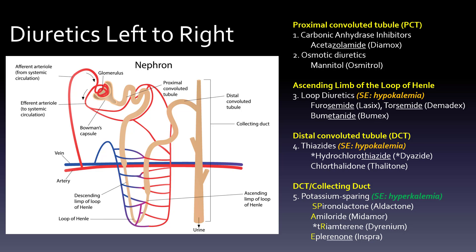I like to use SPARE as a mnemonic for the potassium-sparing diuretics: SP for spironolactone (Aldactone), A for amiloride (Midamor), R for triamterene (taking the second letter), and E for eplerenone (Inspra). Spironolactone and eplerenone work the same way; amiloride and triamterene work the same way.